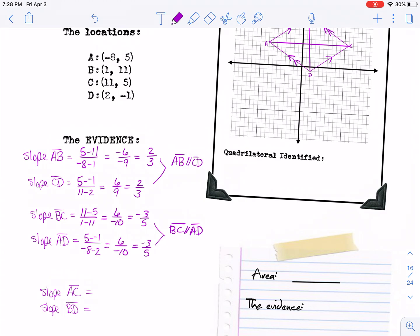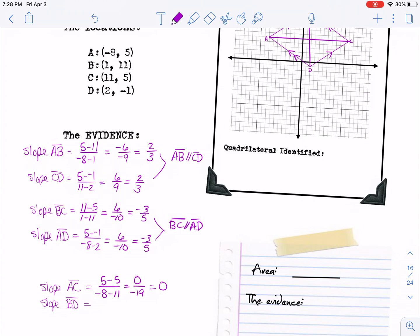The slope of AC is 5 minus 5 over negative 8 minus 11, so you get zero on the top and negative 19 on the bottom, but that's zero, and that fits with the picture—it seems to be a horizontal line there, so the slope should be zero.